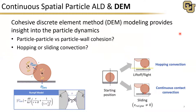We're also interested in what form of vibratory convection is occurring here. There are two dominant mechanisms discussed in the literature. The first is a hopping convection mechanism, where particles lift off of the frit during portions of the vibration. The second is a continuous contact convection mechanism, where particles slide forward more than they slide backward, leading to net forward motion. Continuous contact convection is more common under non-sinusoidal excitation, whereas hopping convection is more common under sinusoidal excitation. So we need more information about the vibration waveform before we can determine which is occurring in continuous spatial particle ALD.